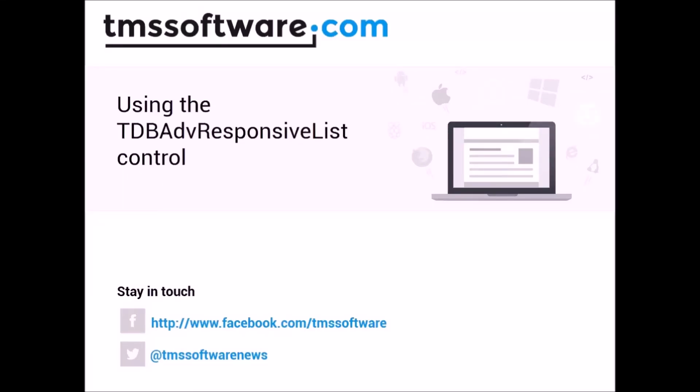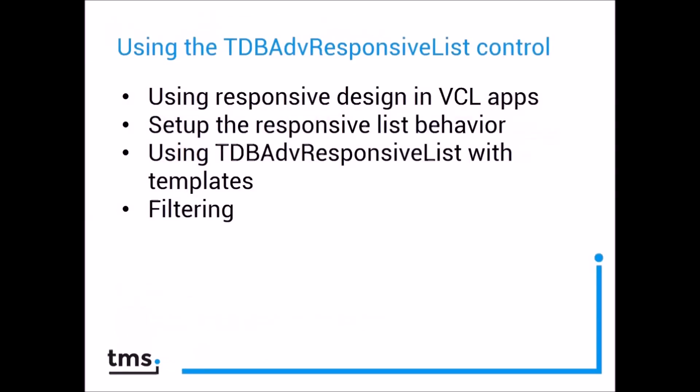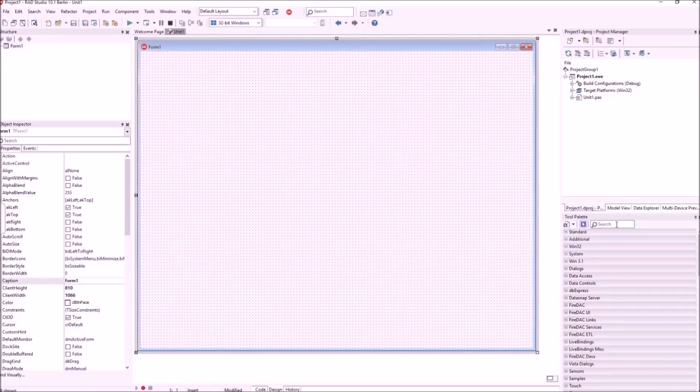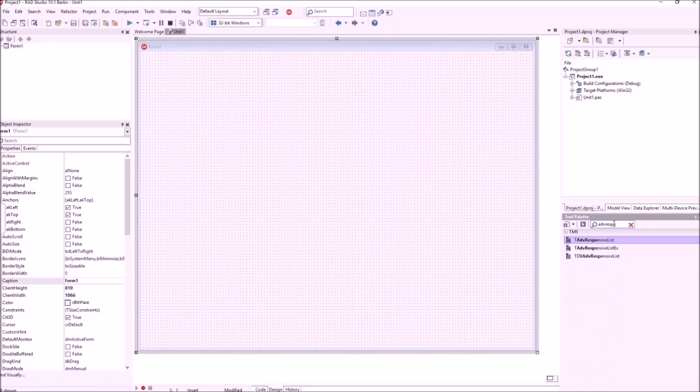Introducing responsive design in VCL applications with the TDB ADV Responsive List. In this demonstration, we'll learn how you can apply the techniques from responsive design, typically coming from the web, and use them in VCL applications. We'll cover how to set up the responsive list control, control its behavior, use templates, and finally how to do filtering in this list. Let's move to Delphi and explore.